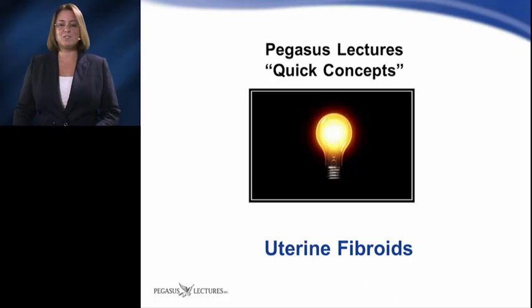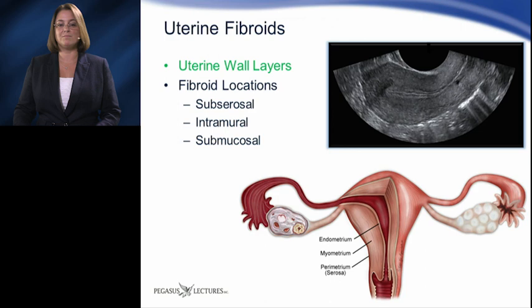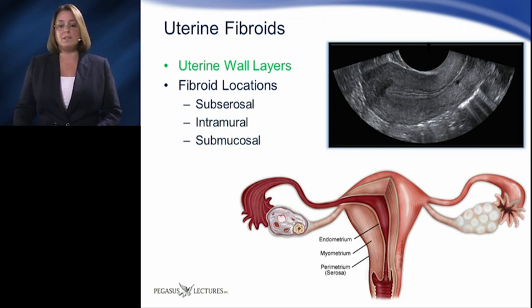This Pegasus Lecture's quick concept is on uterine fibroids. Uterine fibroids, also called leiomyomas or myomas, are benign tumors that develop in the uterus.